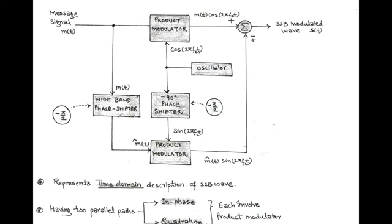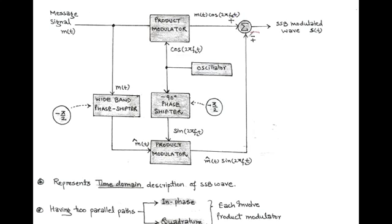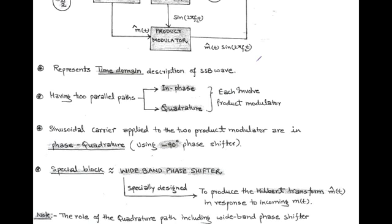cos(2πf_C t) is the input of the in-phase product modulator, and sin(2πf_C t) is the input of the quadrature product modulator — both sinusoidal carrier signals in phase quadrature. The message signal M(t) is the input of the in-phase product modulator, and its Hilbert transform M̂(t) is the input of the quadrature product modulator. The output of the in-phase path is M(t)cos(2πf_C t), and the output of the quadrature path is M̂(t)sin(2πf_C t). Both outputs are added using a summer — using a minus sign for upper single sideband and a plus sign for lower single sideband.